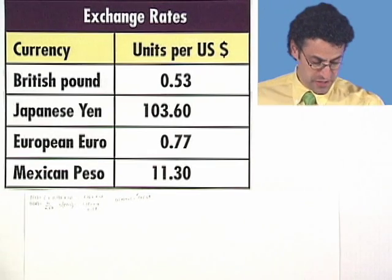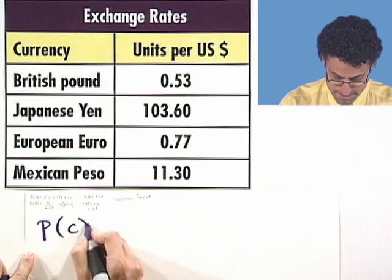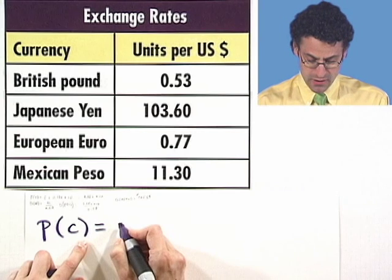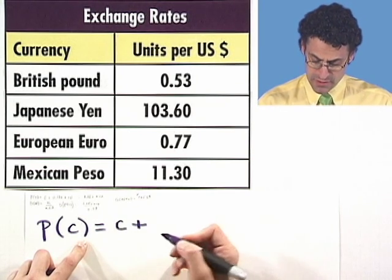Now what's the price? So suppose in C pounds, what's the price? Well, the price is going to be the cost of the item plus the tax.